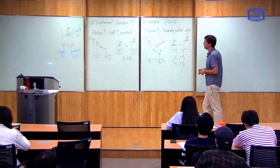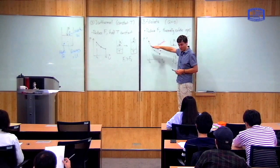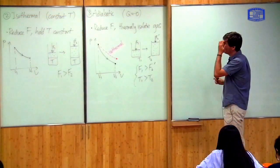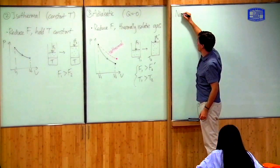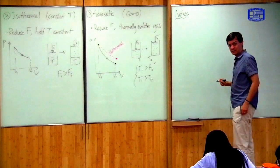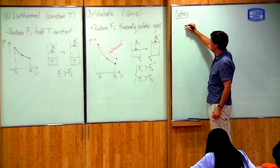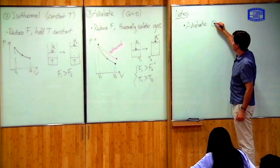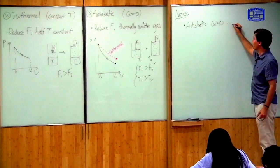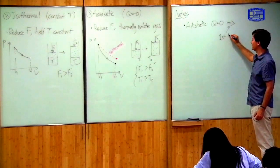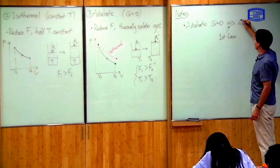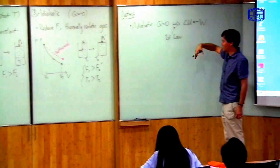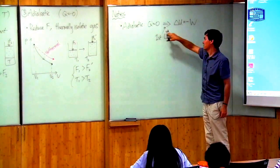So we've seen three types of expansion: isobaric at constant pressure, isothermal where you hold the temperature constant, and adiabatic where you do not allow heat to flow. These are idealized expansion procedures. A couple of notes to finish: for the adiabatic case, Q equals zero, and the first law of thermodynamics tells you that the change in internal energy is simply minus the work done — delta U equals Q minus W, but Q is zero, so it's just minus W.